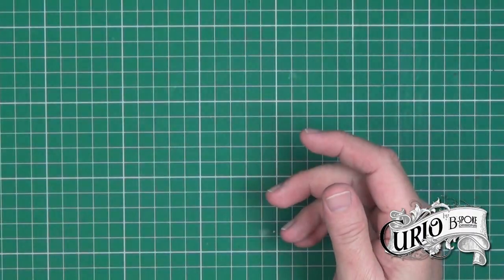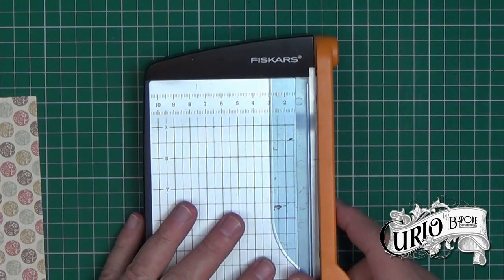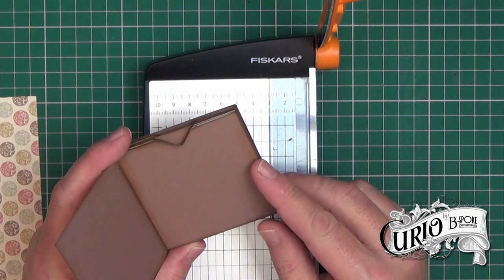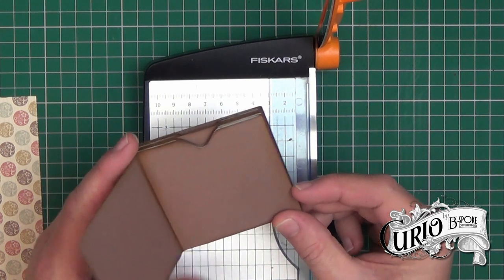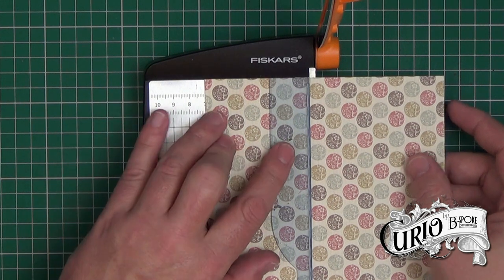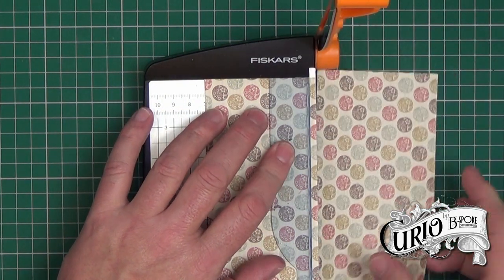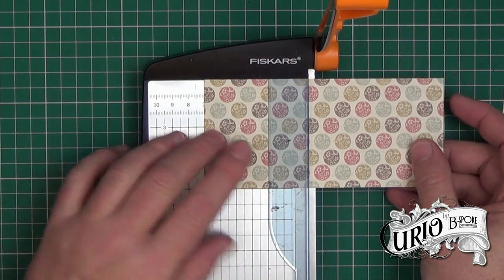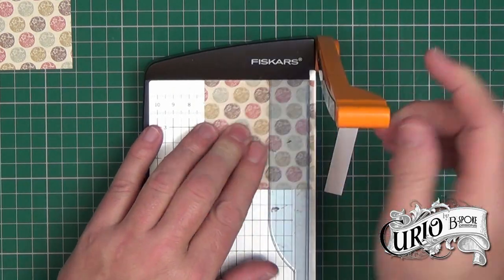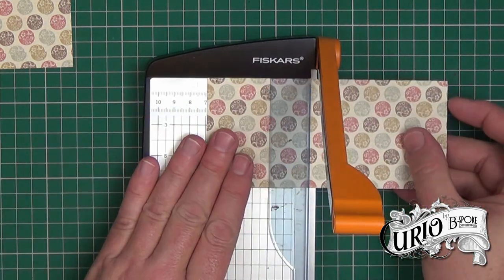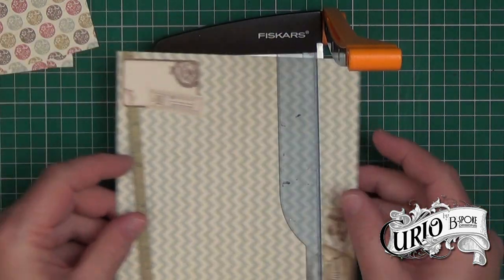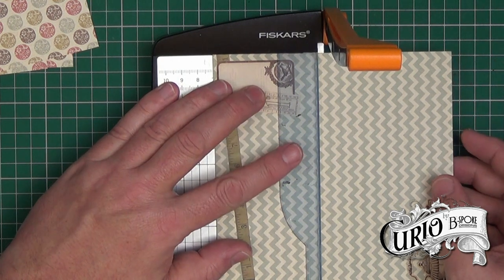I'm going to cut them down to a size of seven centimetres by seven centimetres. As this is a three inch by three inch mini album, the page sizes are about seven and a half centimetres by seven and a half centimetres. With some of the papers doesn't matter too much how you cut them as long as you cut them to the right size. With others it's important to remember how you cut them.